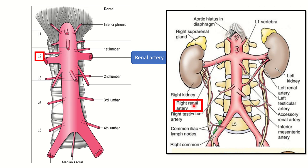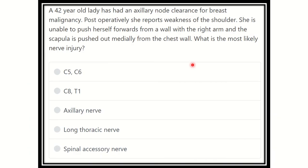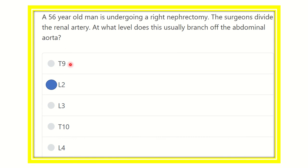The renal artery is a lateral branch of the abdominal aorta. We can see this is the L1 vertebra and this is the L2 vertebra, so the renal artery is located at the level of the L1 lumbar vertebra. The answer is that the renal artery arises at the level of the L1 lumbar vertebra.